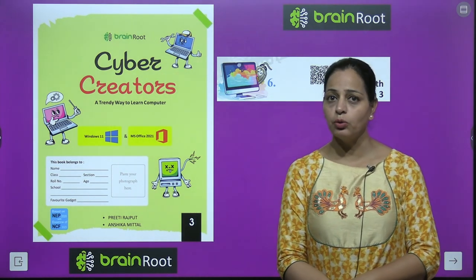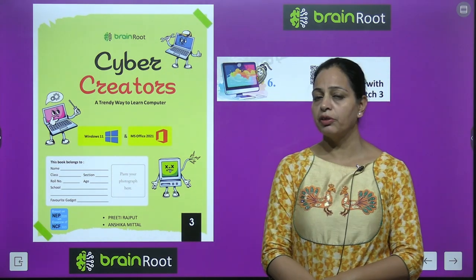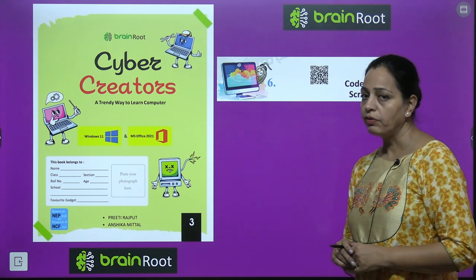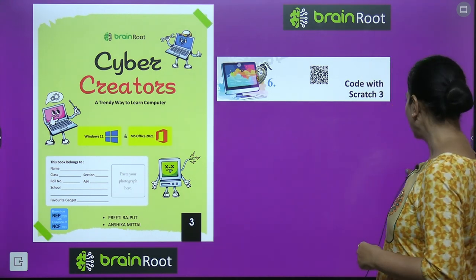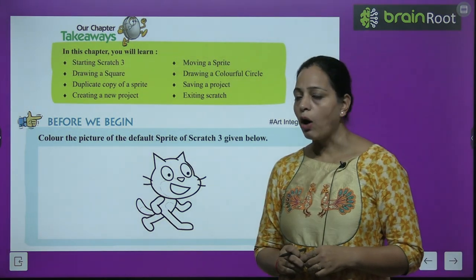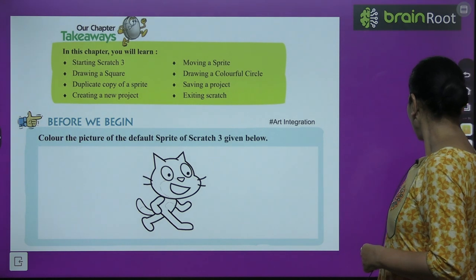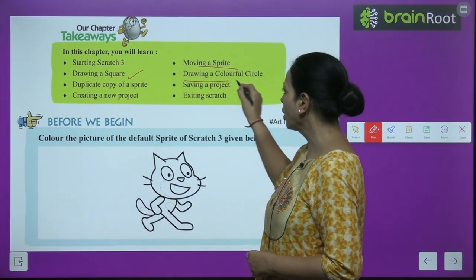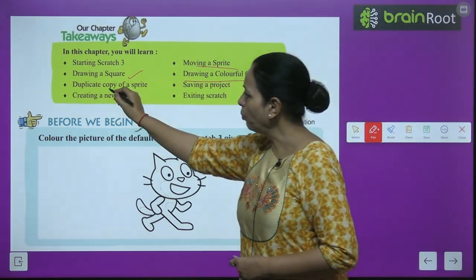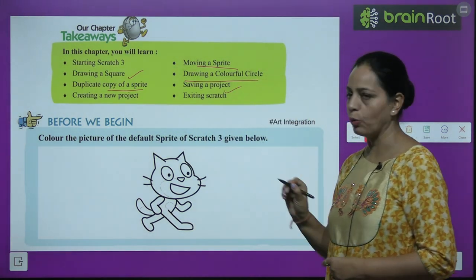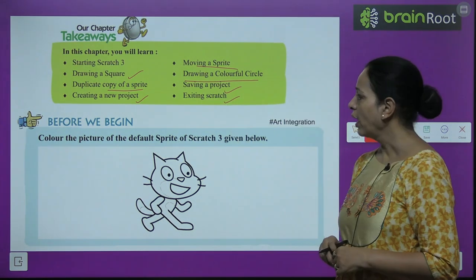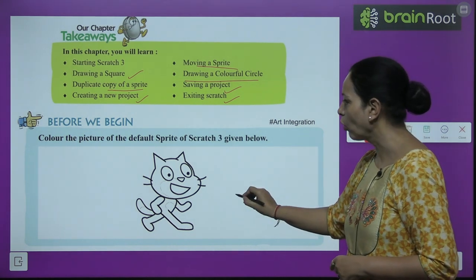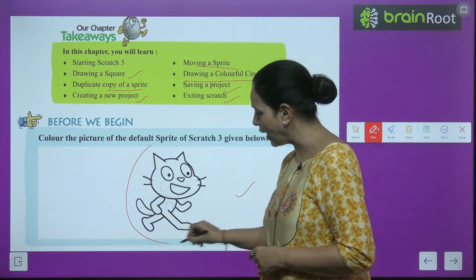Hello kids, welcome back. This is your mentor Neetu. We are doing computer book Cyber Creators Class 3 by Brain Dude. Today we are doing Chapter 6: Code with Scratch 3. In this chapter you will learn about starting Scratch 3, moving a sprite, drawing a square, drawing a colorful circle, duplicating a sprite, saving a project, creating a new project, and exiting from Scratch.